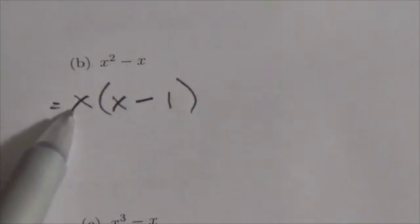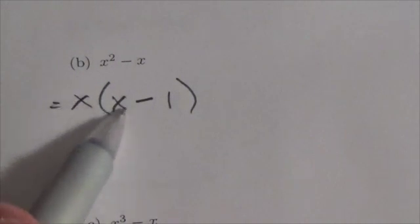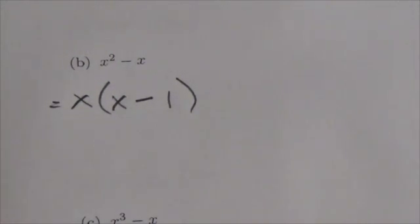So now when I distribute that x through to both of those terms, I'm going to get x squared minus x when I multiply that out.